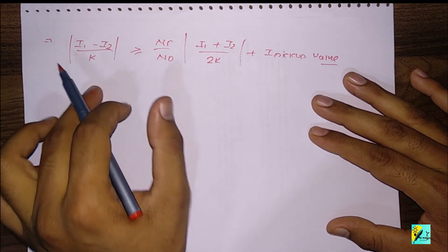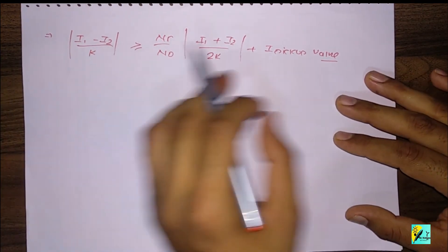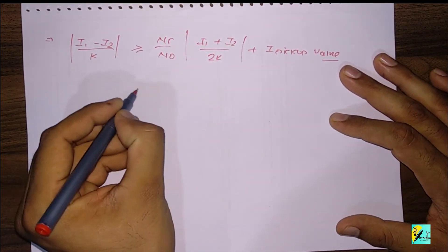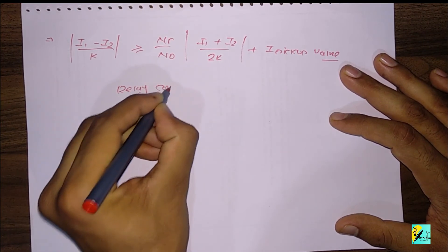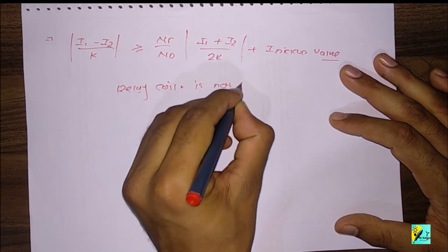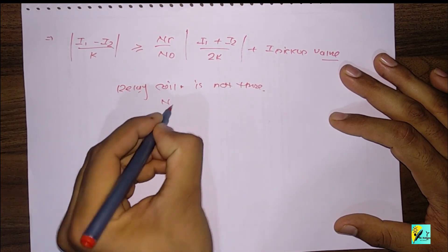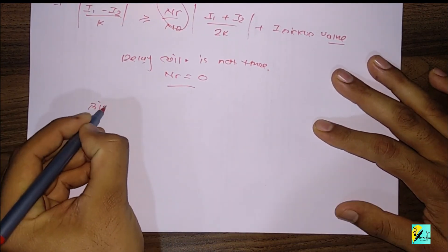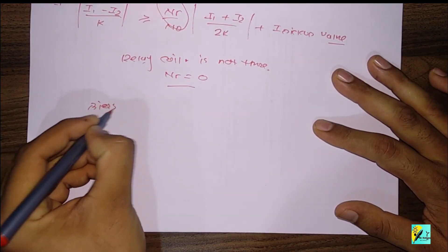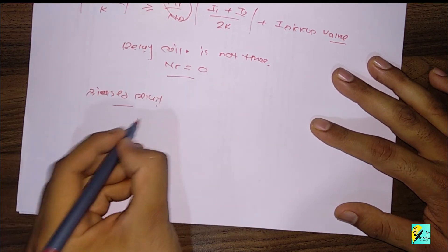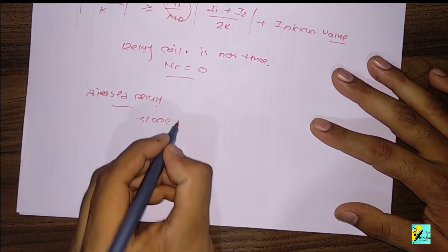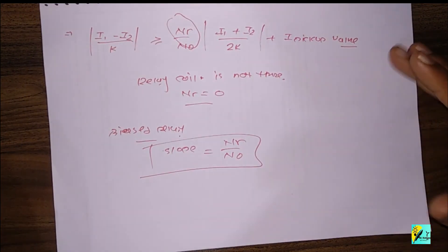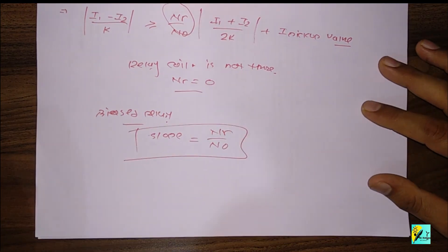The equivalent operating coil current should be more than the equivalent restraining coil current plus the pickup value. If the restraining coil is not there, you consider Nr equal to zero, and you get the earlier simple differential relay condition.